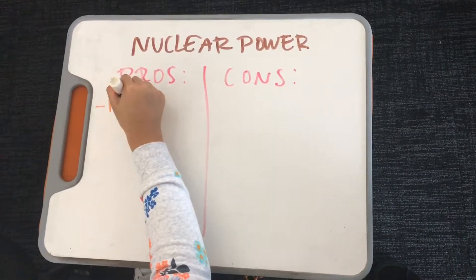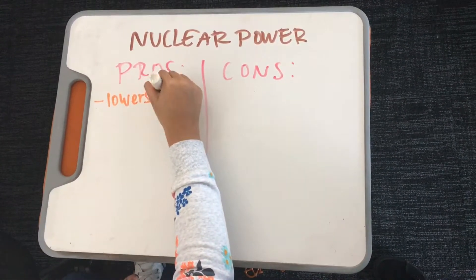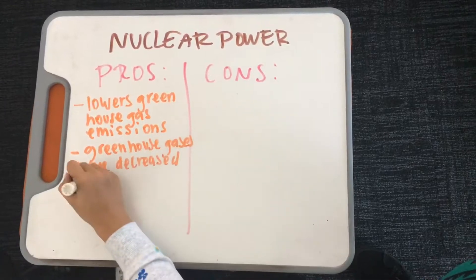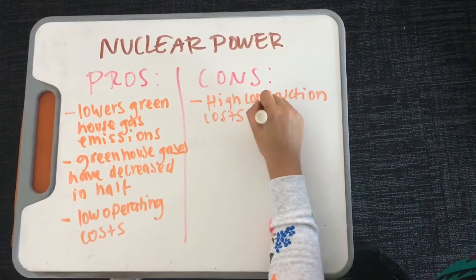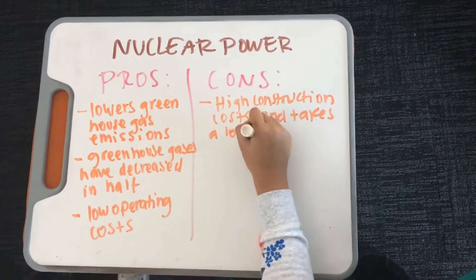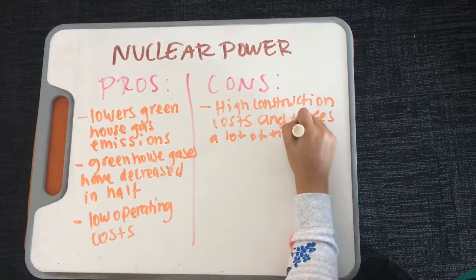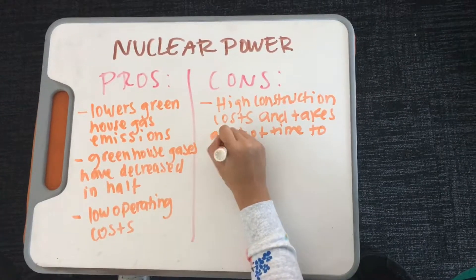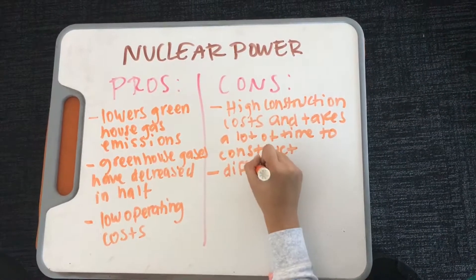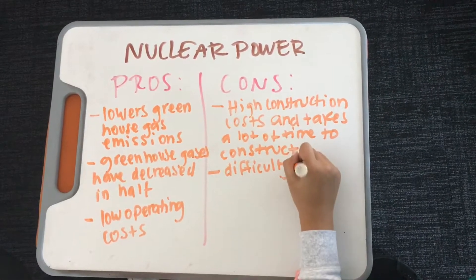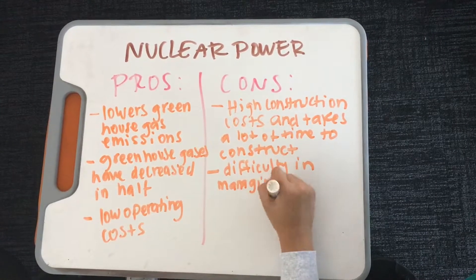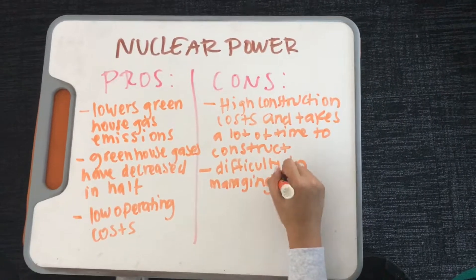Some advantages to using nuclear power plants include the reduction of our reliance on fossil fuel generated energy and low operating costs. However, the cost of construction for these plants tends to be very high. In addition to this, it is very difficult to manage the amounts of nuclear waste that is produced in these plants.